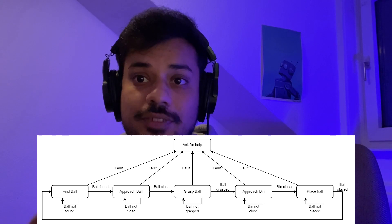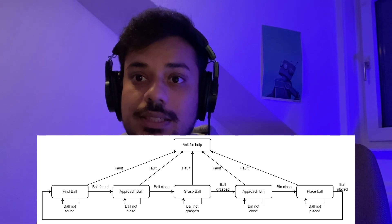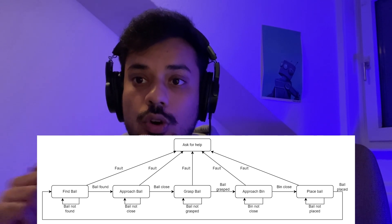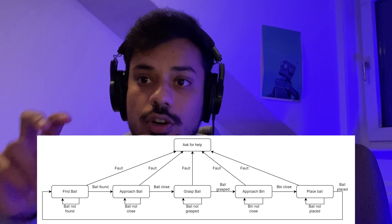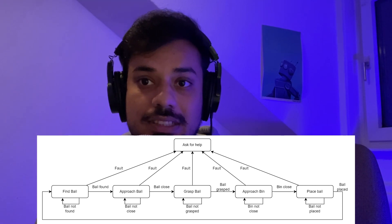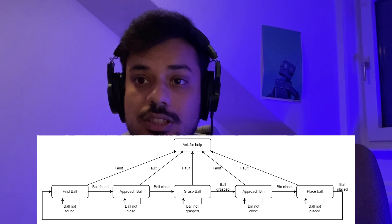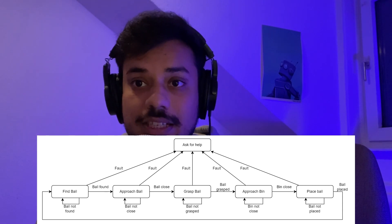That was a very simple example of a finite state machine. You can go into more details, because what I've explained is a simplified idea. Now let's look at a more evolved but still very simple finite state machine of a robot. This robot is supposed to find a ball, go to the ball, pick it up, then go to a bin and drop it in the bin, and the process repeats. This is the state machine of that robot.